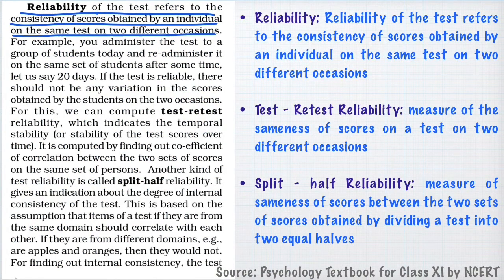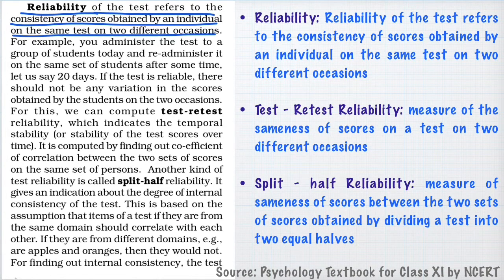Another important characteristic of psychological tests is that they are reliable — they have a feature called reliability. Reliability of a test refers to the consistency of scores obtained by an individual on the same test on two different occasions. A psychological test gives the same or very similar scores when given to the same person or group on two different occasions.